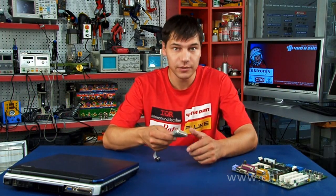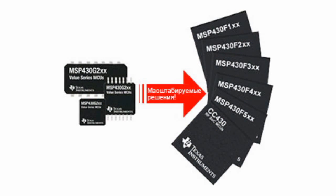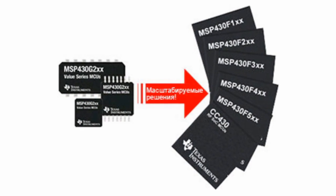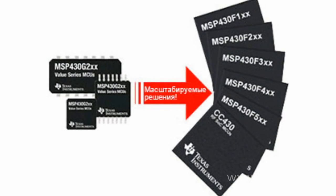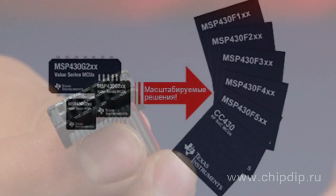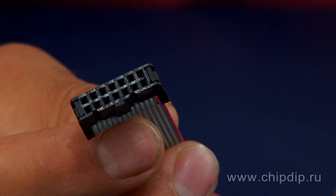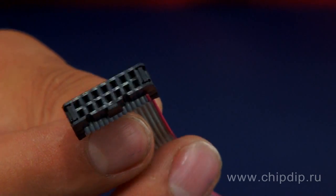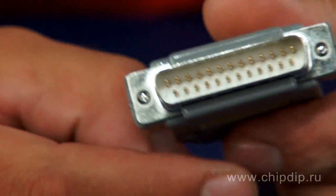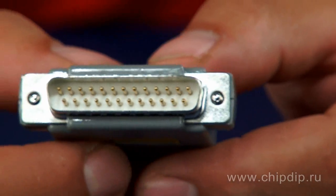The MSP430 JTAG is an expensive JTAG programmer and a flash emulator of MSP430F chips, manufactured by Texas Instruments. The JTAG programmer can be used to program all MSP430F flash microcontrollers using the standard 2x7 pin JTAG connector by Texas Instruments, and is fed off of the LPT port.